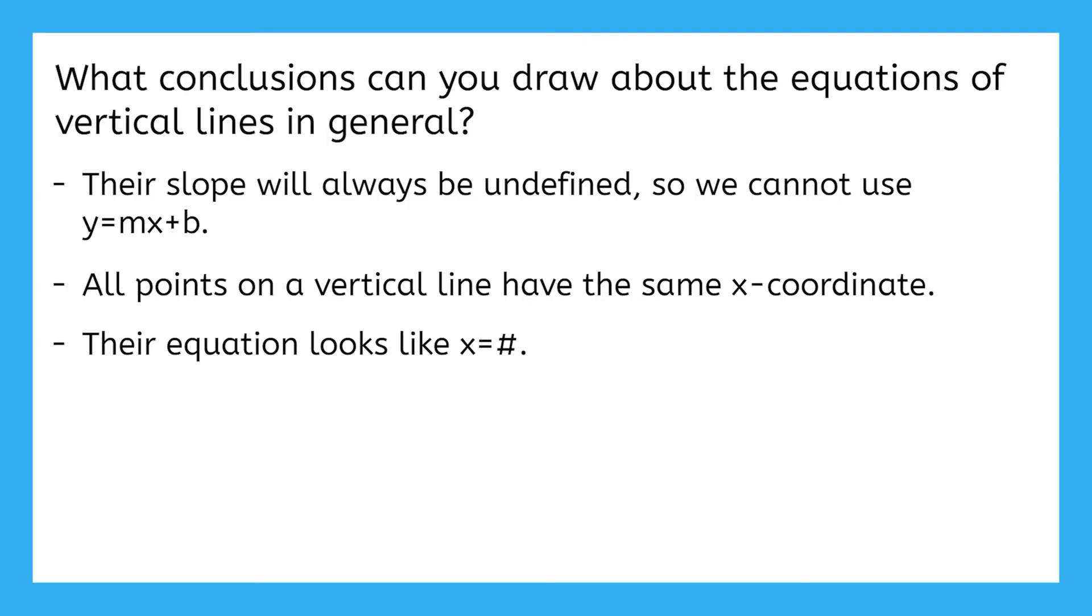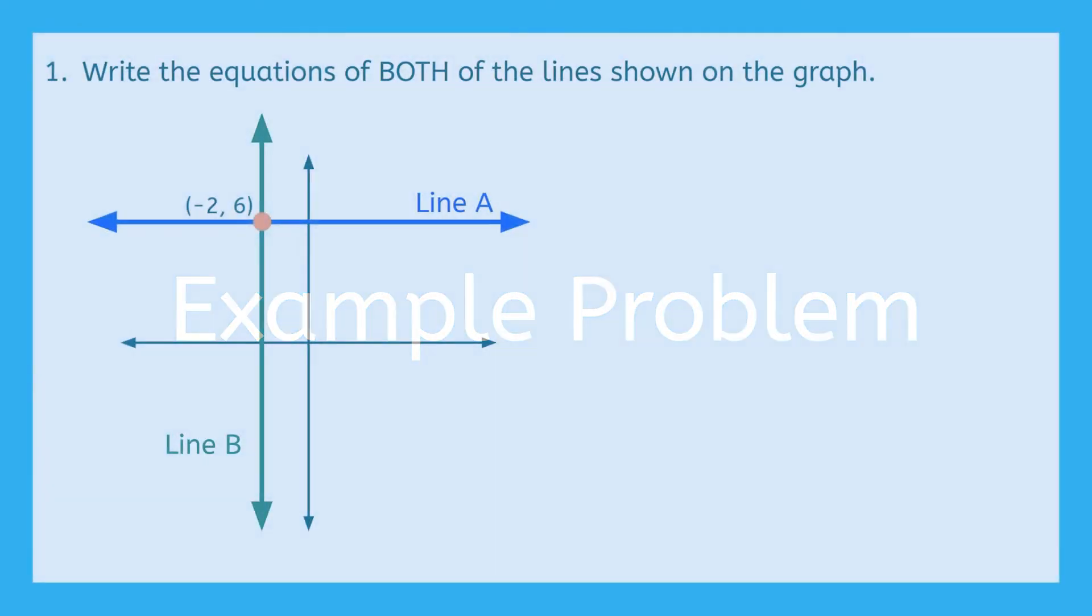Since we now know more about horizontal and vertical lines, let's bring it all together for one example problem. Our example problem says to write the equations of both of the lines shown on the graph. Oh hey, notice how this graph just doesn't have all the grid marks on it? That's a little tricky, but we do know the coordinates of the point where these two lines intersect. That must be enough information to write the equations of these lines. Pause the video here and give this a try on your own first.